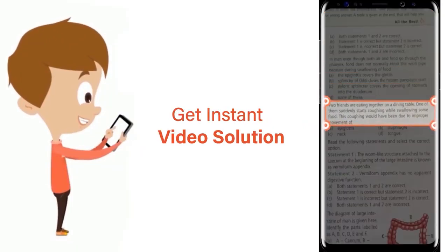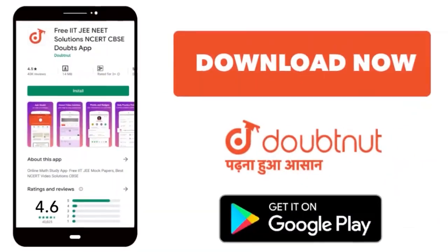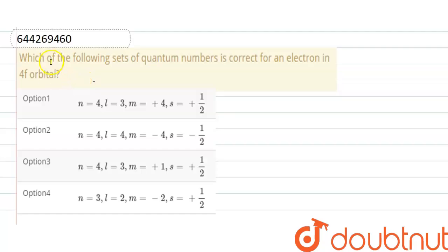Hello everyone, here the question is which of the following sets of quantum numbers is correct for an electron in 4f orbital? So...